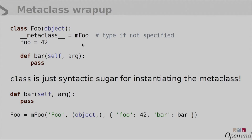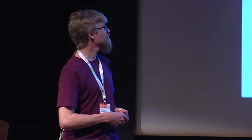One thing to take away about metaclasses: the class declaration syntax in Python is really only syntactic sugar for instantiating the metaclass. The top code and the bottom code produce exactly the same foo class — once you've run the code, you cannot tell the difference between these two. Remember that you can use the class declaration syntax to essentially instantiate the metaclass, and that gives you lots of power to use the class syntax for things that are classes, but not really standard Python classes.